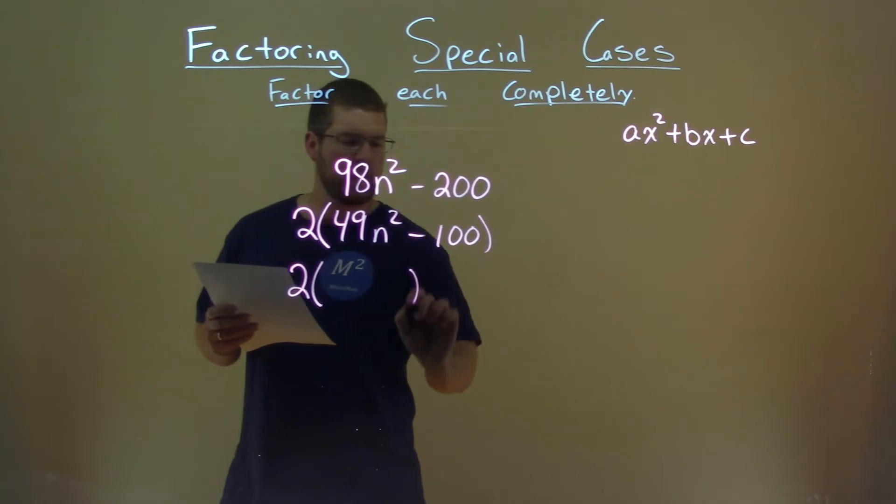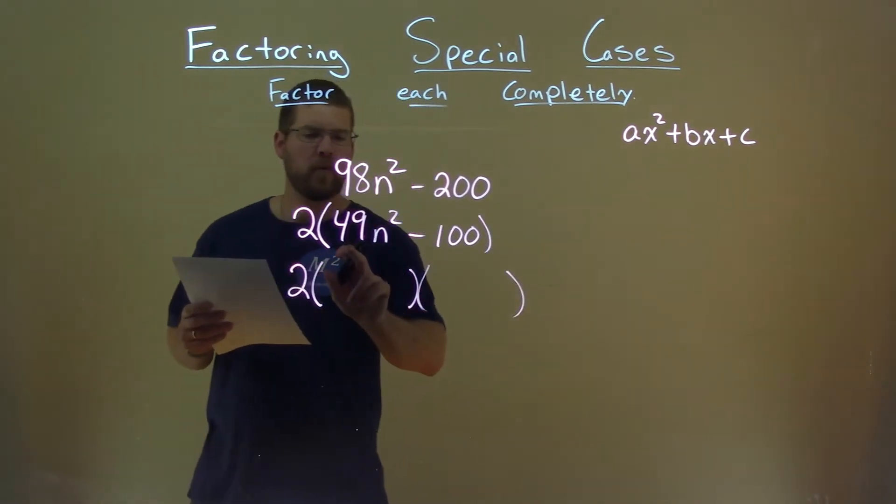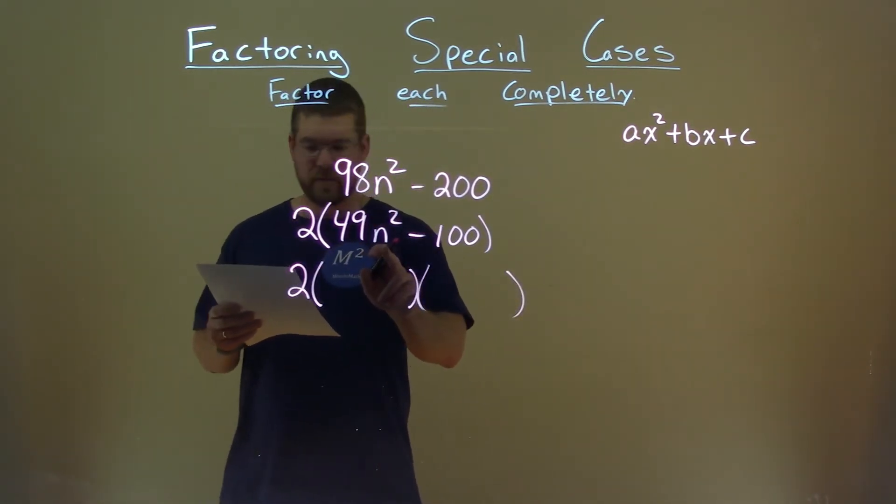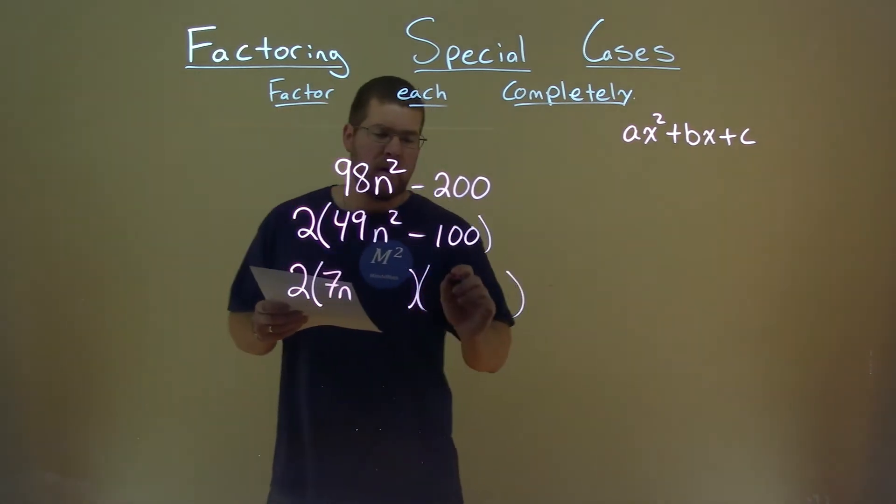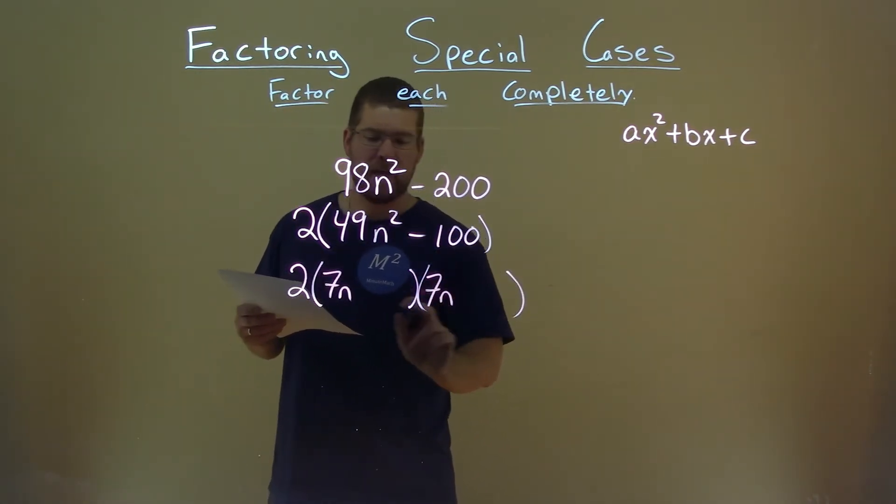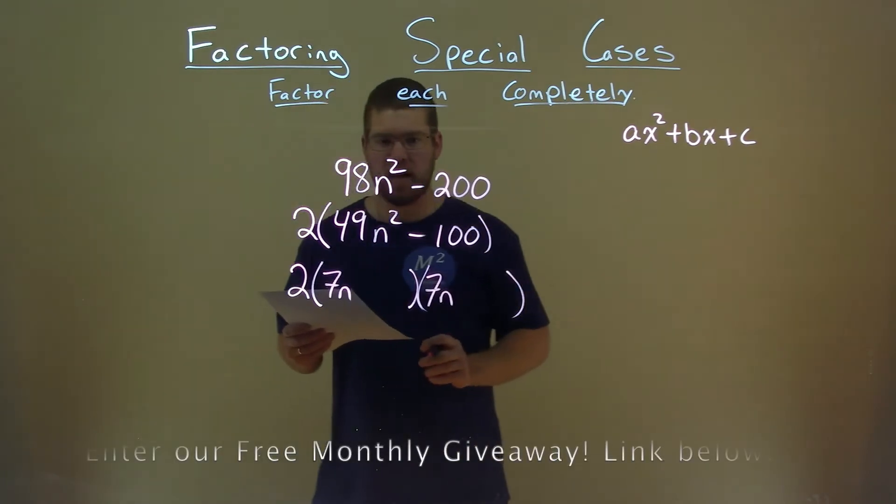Meaning, when we have it in this form, 49N squared, the square root of that is just 7N. And we put that here. 7N times 7N gives us that 49N squared.